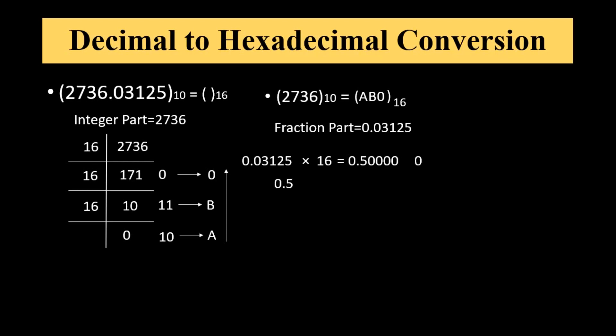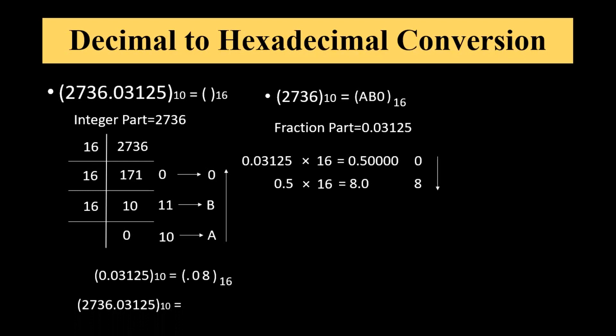In the next step, 0.5 multiplied by 16 gives 8.0, so the integer value is 8. Now we get 0.0, which means further multiplication is not possible. We take the integer values in the forward order as shown by the direction. So decimal number 0.03125 equals 0.08 in hexadecimal. Therefore decimal number 2736.03125 equals hexadecimal number AB0.08.